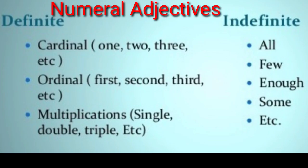Now we will see numeral adjectives. There are two types: definite numeral adjectives and indefinite numeral adjectives. Definite numeral adjectives have three subtypes: cardinal — one, two, three and so on; ordinal — first, second, third, fourth, fifth, which show rank; and multiplicative — single, double, triple, etc.